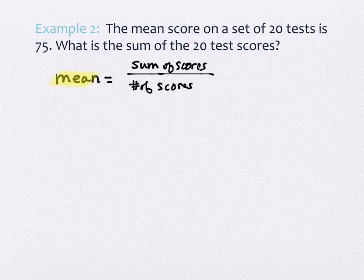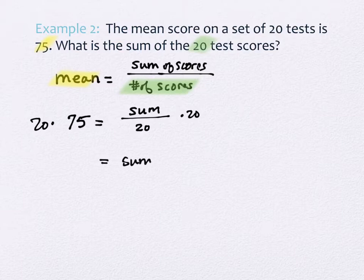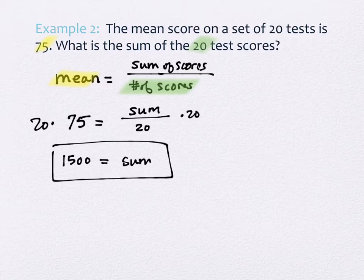So in this problem, they actually give me the mean, 75, and they give me the number of scores. So those are the places where I'm going to evaluate in. I'm going to put a 75 here. I have my sum that I don't know on top here, and I have 20 scores. So I'm not finding individual scores. I'm just finding the sum. So what would I do to solve this for the sum? Yep, I would multiply by 20. All right, so 75 times 20 is what? 1,500 is correct. So the sum of the scores is 1,500.